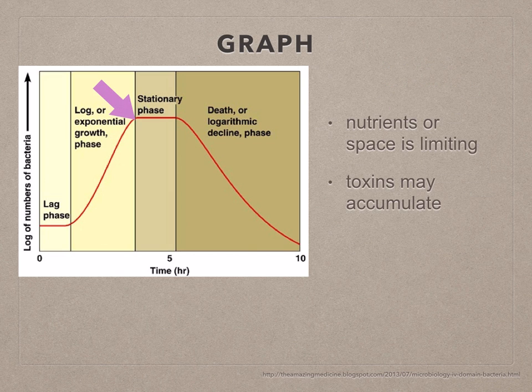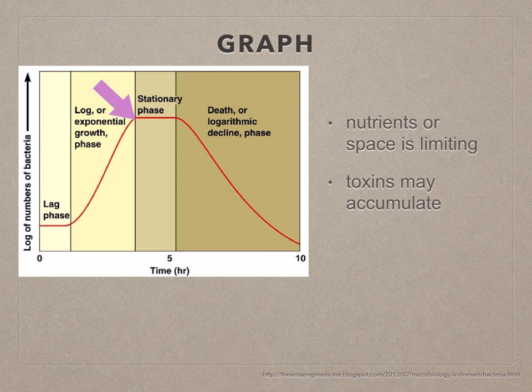In a closed system, the nutrients or the space become the limiting factors, or toxins accumulate, so the growth rate slows down.